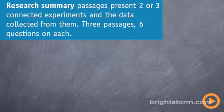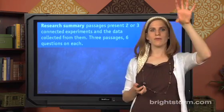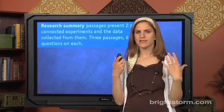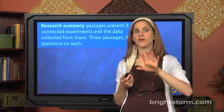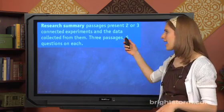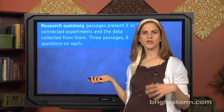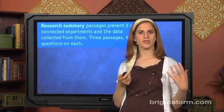The second type is research summary. These passages present two or three connected experiments and the data collected from them. You'll see experiment one, experiment two, experiment three — usually a paragraph about each, sometimes with a lot of jargon, but we'll talk about how you don't need to worry about that. Then a chart, graph, or table depicting the evidence found or how the experiment was performed. There are three research summary passages with six questions on each, for a total of eighteen questions.